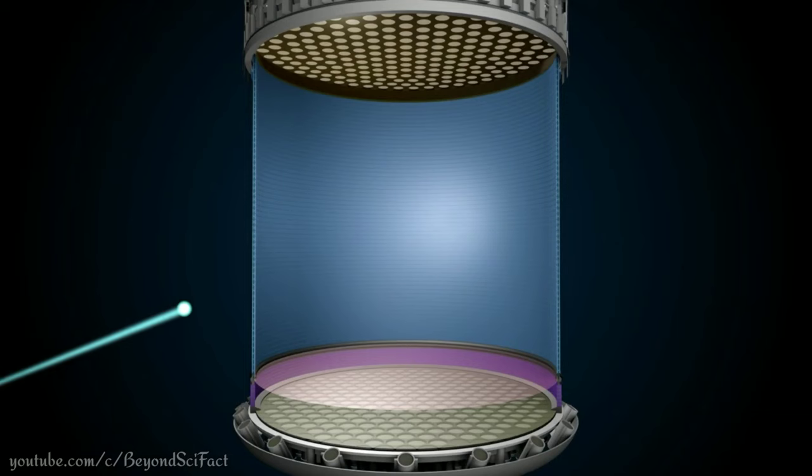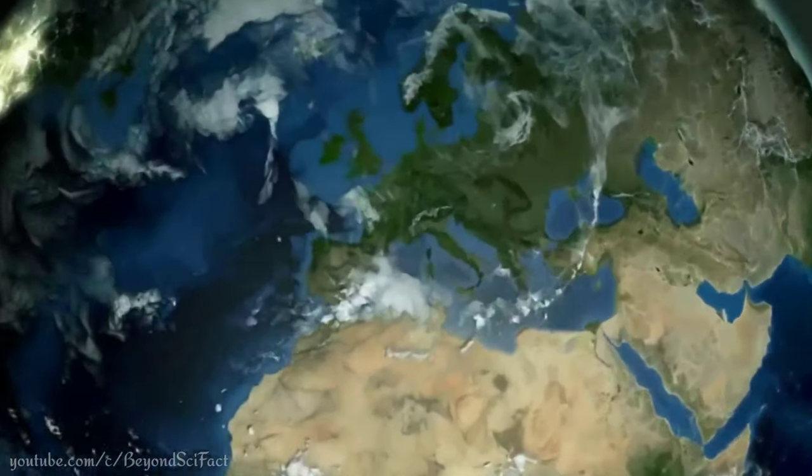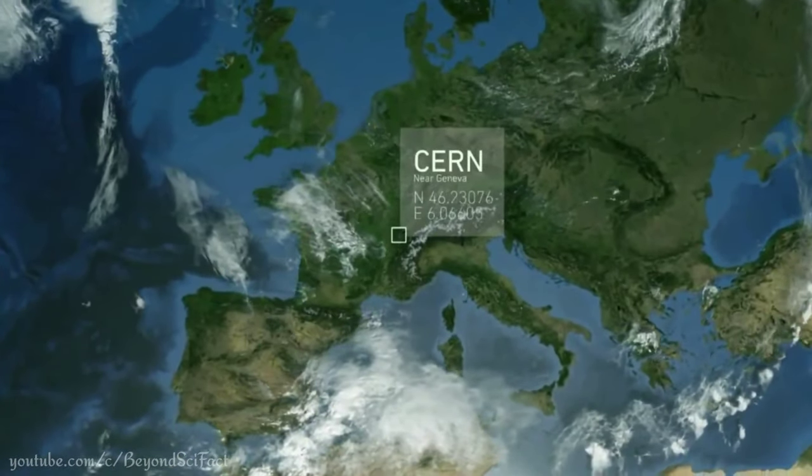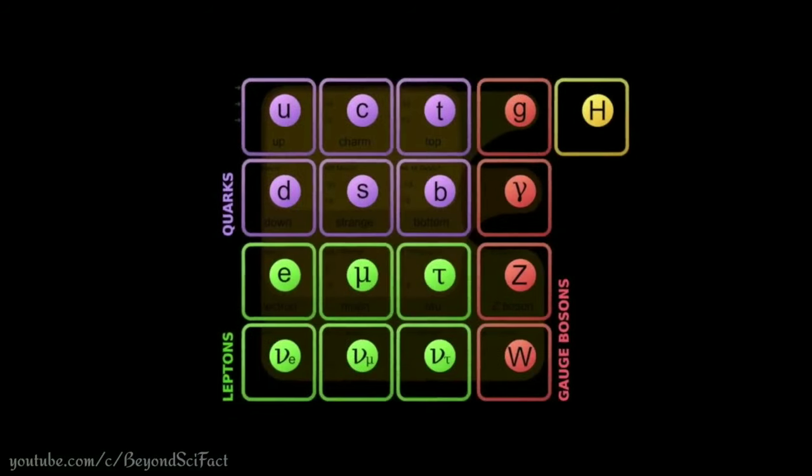Second, direct detection with highly sensitive low background experiments looking for dark matter scattering of nuclei. And third, by creating dark matter in the controlled laboratory environments of the Large Hadron Collider at CERN.